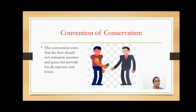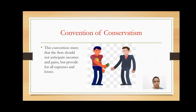The next is the Convention of Conservatism, also known as the Prudence Convention. This convention states that the firm should not anticipate incomes and gains but should provide for all expenses and losses. Anticipated profits are ignored because profit may or may not arise, so they won't have an effect on the business. Whereas anticipated losses are considered while preparing the financial statement, because if losses arrive, the business has to face them — hence we need to anticipate all possible losses.